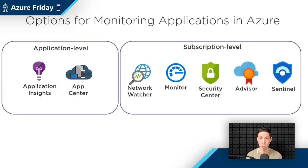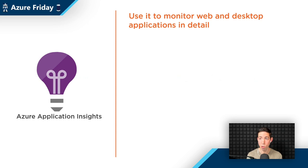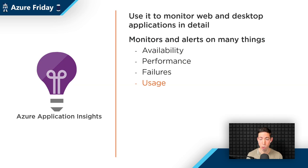Now let's look at some of the functionality and dive into some of these services. Here is Azure Application Insights, which is now a feature of Azure Monitor. You use this to monitor web and desktop applications in great detail. You can monitor and alert on many things like availability — you can have this monitor the availability of an Azure App Service web app and send you an alert when availability goes down. Or performance, also failures, usage — how many people visit my application, where those people are from, and even what type of operating system they use.